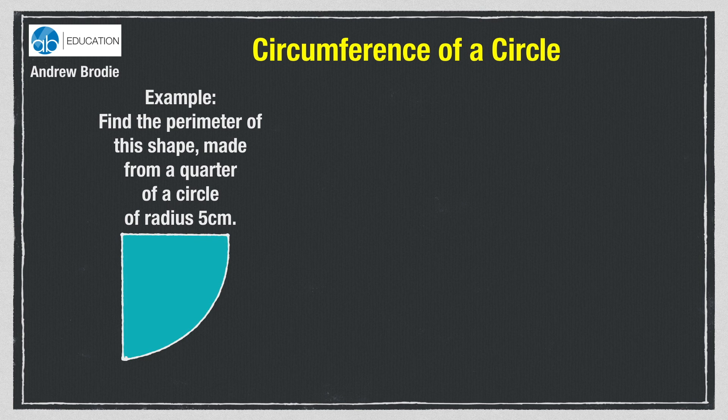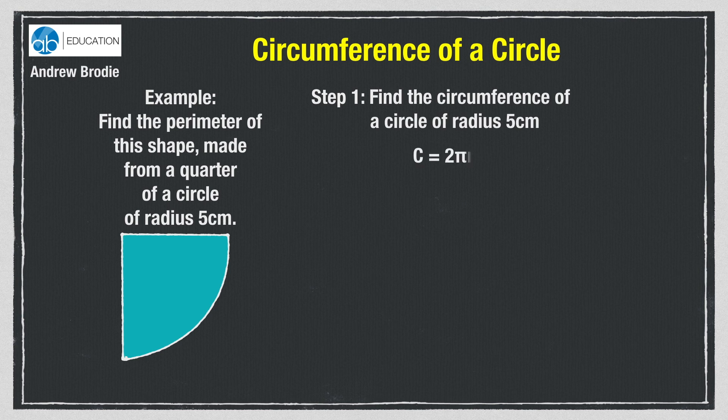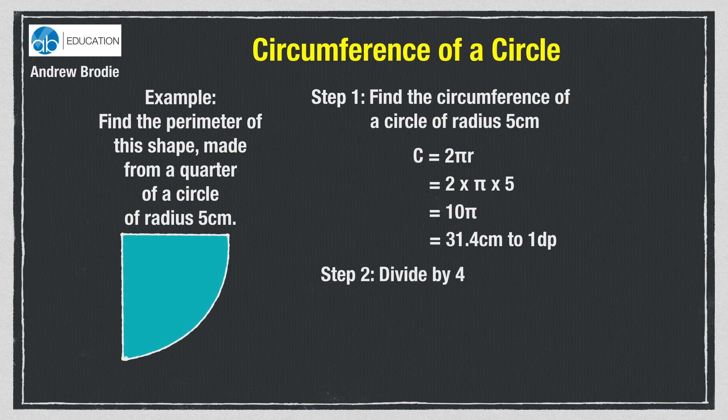Step 1 is to find the circumference of a whole circle that has a radius of 5cm. So we need the formula C equals 2πr. So that's 2 times pi times 5. The calculator may show this as 10π, and if so we'll need to press the SD button and find the answer 31.4 to one decimal place. But that's the circumference of a whole circle, so step 2 is to divide by 4 to get the bit we want, which is 7.85cm or 7.9cm to one decimal place.